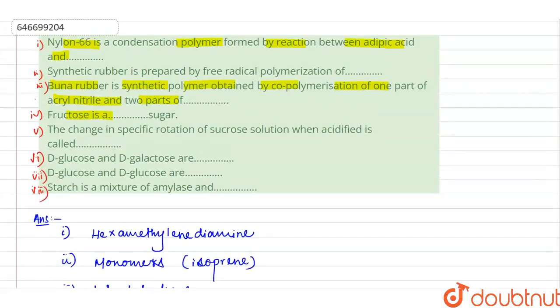Okay, number five: the change in specific rotation of sucrose solution when acidified is called invert sugar.